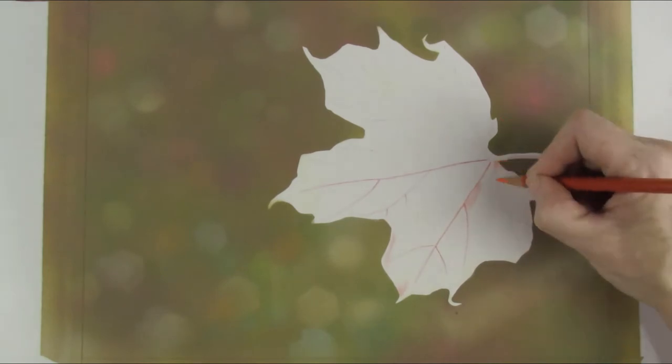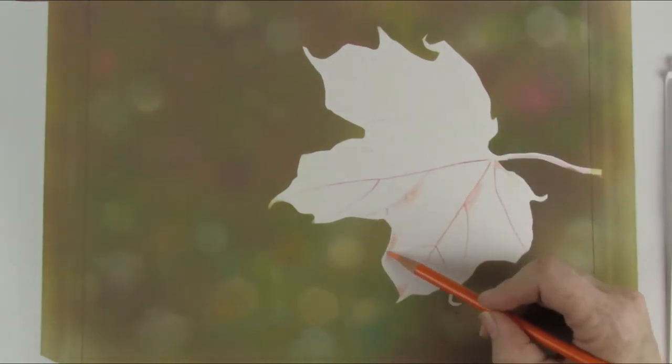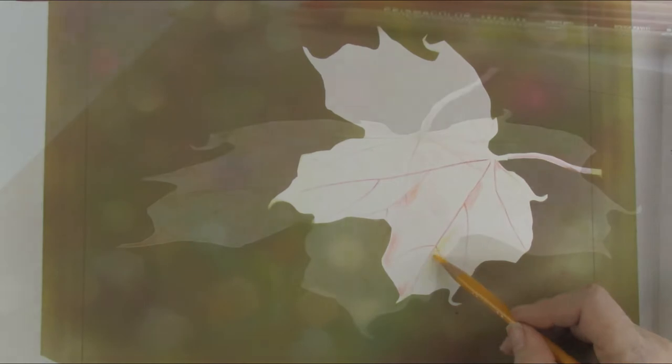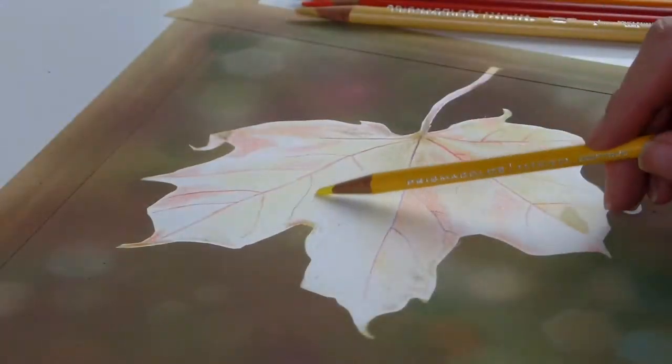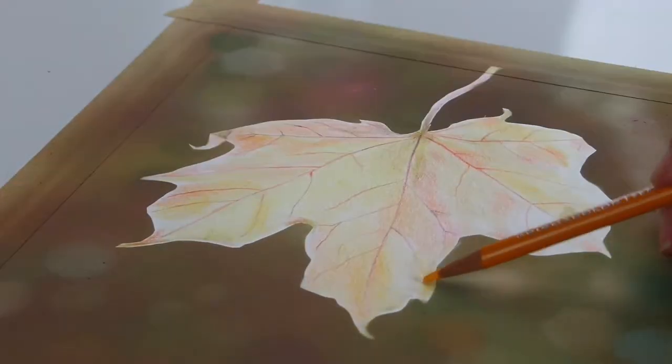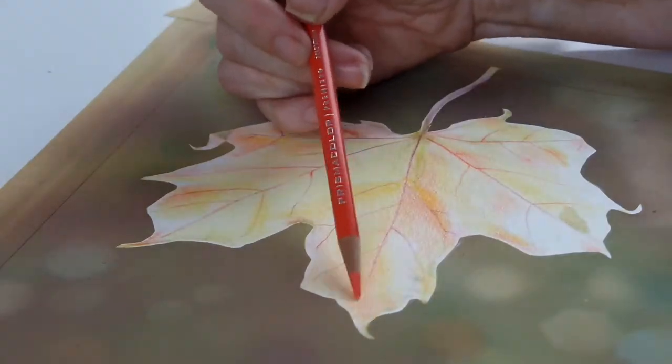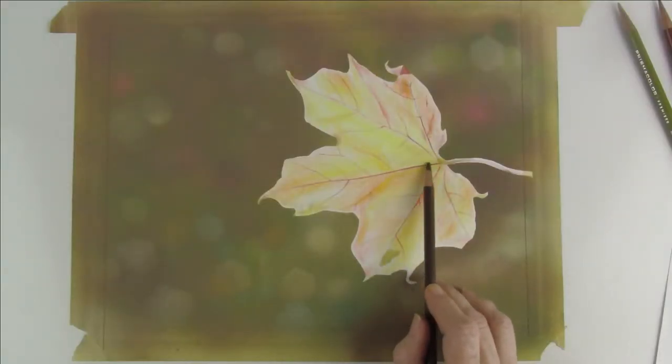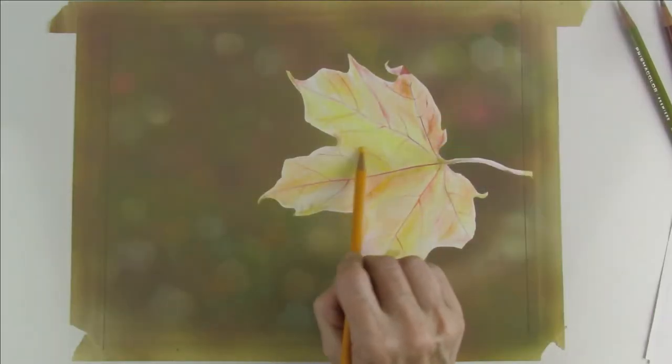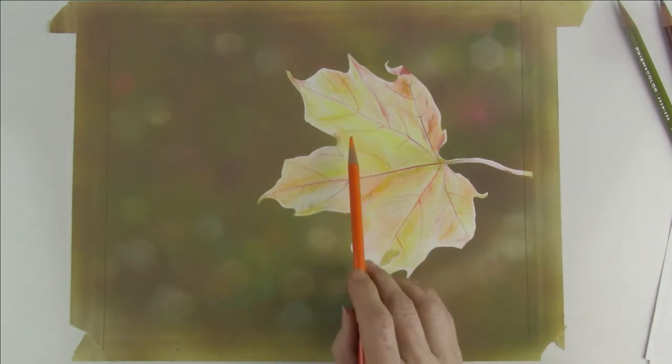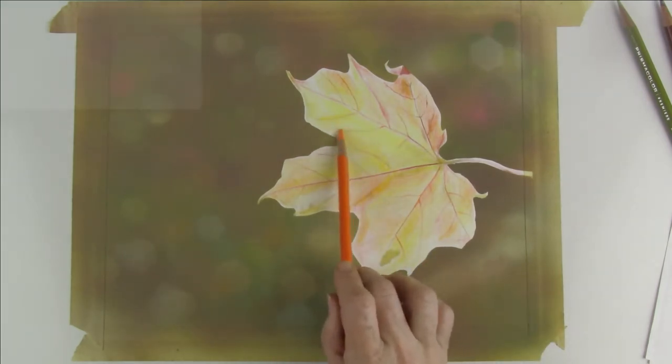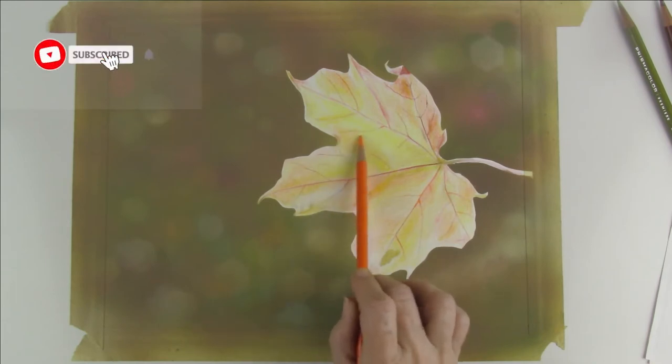This is just the beginning but it's an important step because with colored pencils it's all about the layering. Now the first layer is going to look grainy and underdeveloped but don't be concerned because at this stage you're only placing down a single layer of pigment.